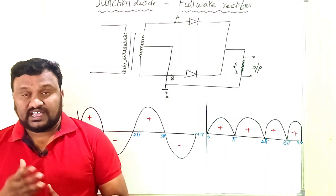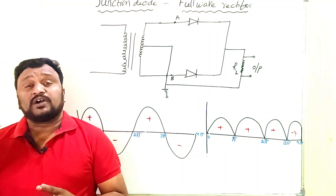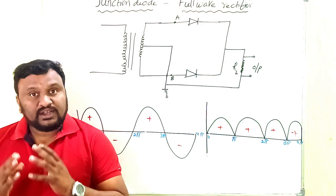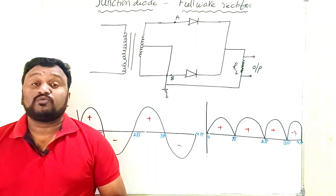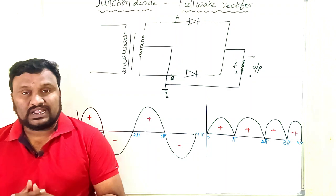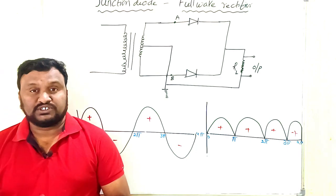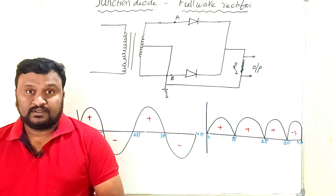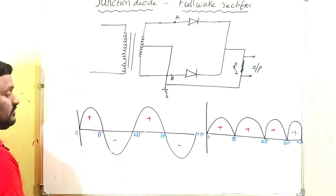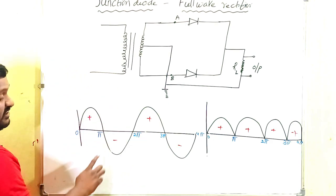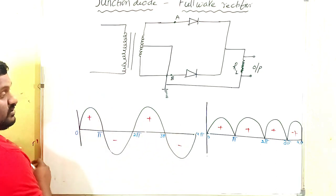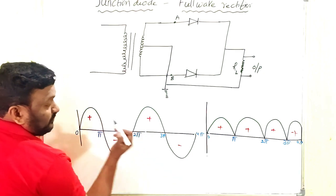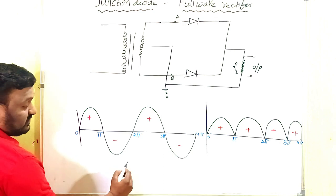What is rectification and what is a rectifier? Rectification means the process of converting alternating current into direct current. The device which performs that rectification process is called a rectifier. Alternating current is where the direction of current changes with respect to time. If there is no change in direction of current with respect to time, that is called direct current. The alternating current appears as a sinusoidal wave with positive and negative cycles — one positive and one negative forming a complete cycle.